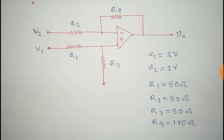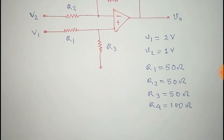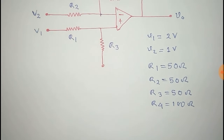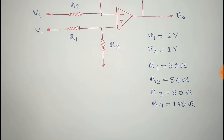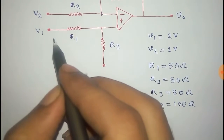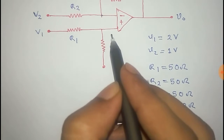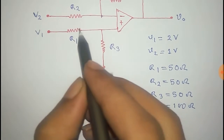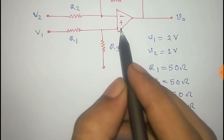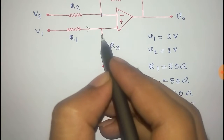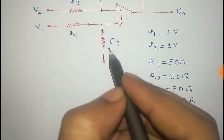With this given data I will find output V0. First, consider this loop. There will be no current through the op-amp because the input impedance of the op-amp is high.